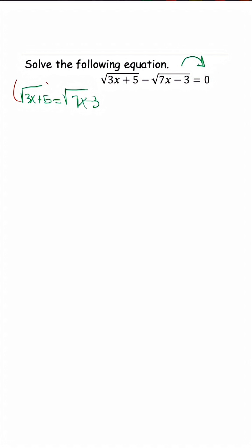And just remember, the goal is to get rid of the radicals, so this is why we square it. So we have 3x plus 5 is equal to 7x minus 3.